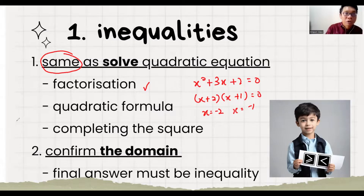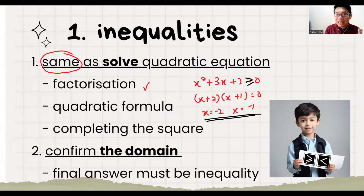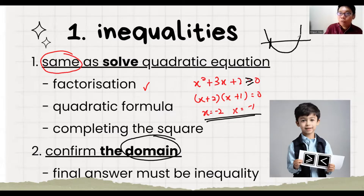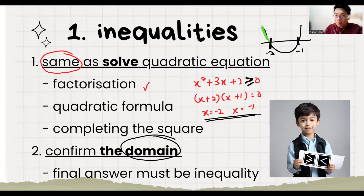But if the question changes to an inequality, your final answer cannot leave it as an equation. You must find the domain — less than or more than something. We need to know what the x-squared graph looks like. It's a u-shape, and you get the two x-values on the x-axis. Arranging from small to big: minus 2 to minus 1. The graph falls into 3 parts: above x-axis, below x-axis, then above x-axis again.